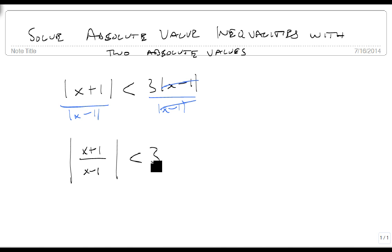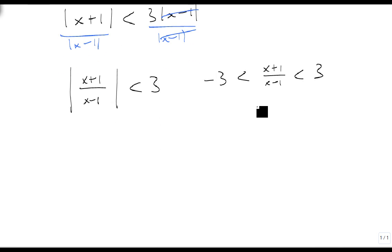Now the absolute value with the less than says that I can turn this into: the opposite sign is less than what's inside is less than the same sign. This is an AND inequality, so we want to know when is -3 < (x + 1)/(x - 1) and when is (x + 1)/(x - 1) < 3.